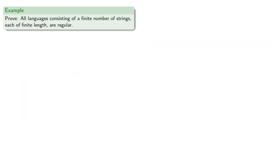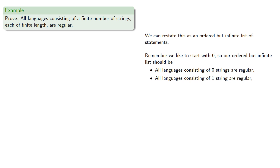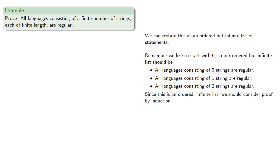Let's go a little further. Let's prove that all languages consisting of a finite number of strings, each of finite lengths, are regular. We can restate this as an ordered but infinite list of statements — we like to start with zero — so our ordered but infinite list should be: all languages consisting of zero strings are regular, all languages consisting of one string are regular, and so on. Since this is an ordered infinite list, we should consider a proof by induction.